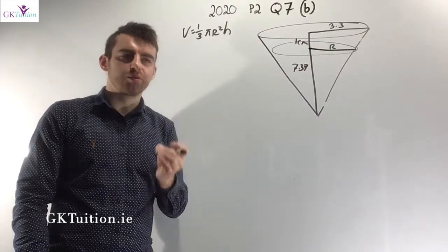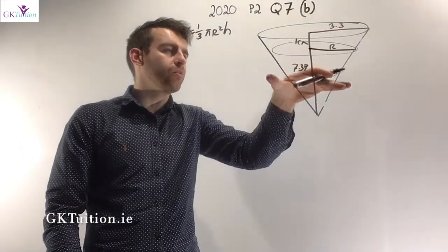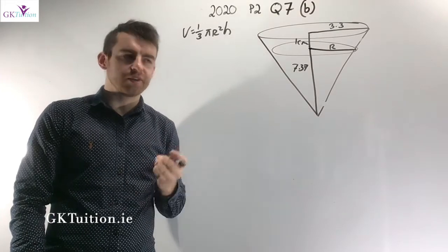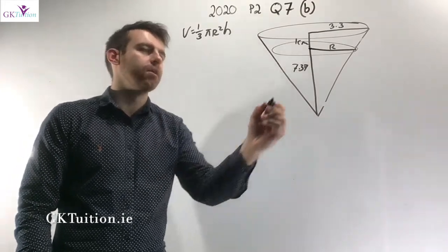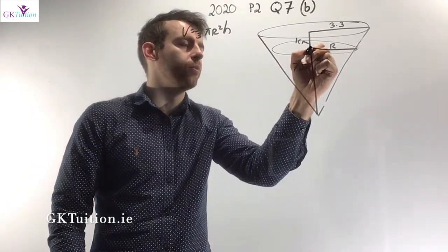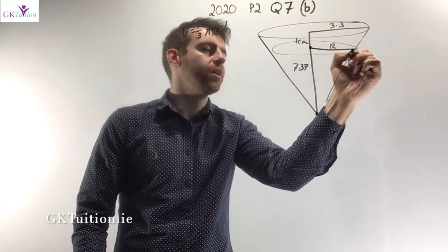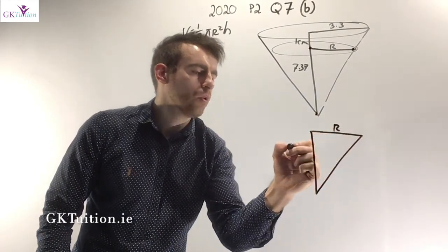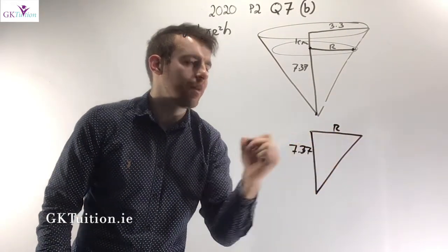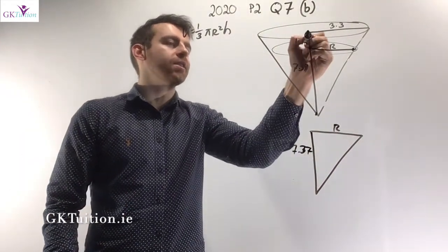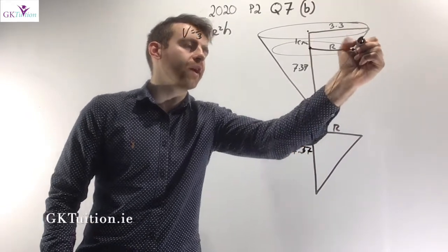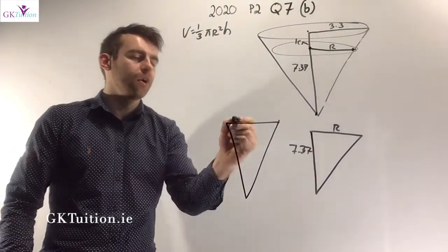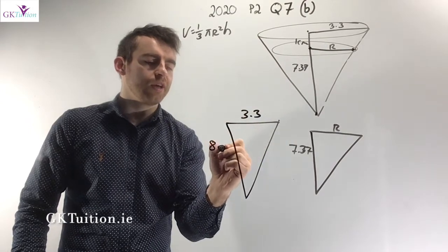I need to work out the radius of the water. The further down we go, the smaller the radius gets. Using similar triangles: one triangle is formed from the vertical height, slant height and radius of the water (height 7.37, radius r), and the other is the full cone triangle (height 8.37, radius 3.3). Both triangles have the same angles — two 90-degree angles and corresponding apex angles — confirming they are similar.